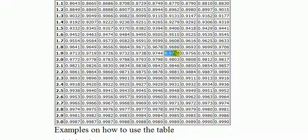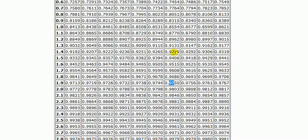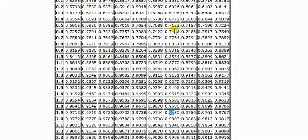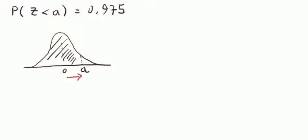Alright, so, the percentage point. Now, the first, or the critical value, the first, up to the first decimal place is given by the figure on the row. So, that's 1.9. And then we'll make up the second decimal place by going up the column, 0.06. So, 1.9 plus 0.06 is 1.96. So, that's the answer. Directly from the tables, a equals 1.96.